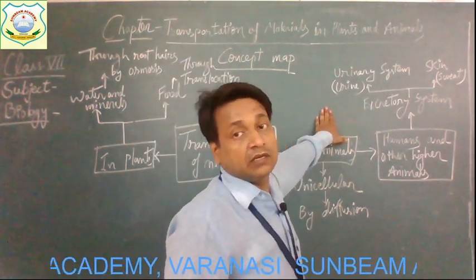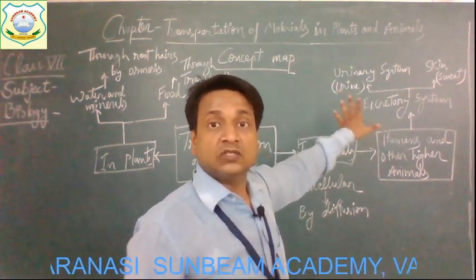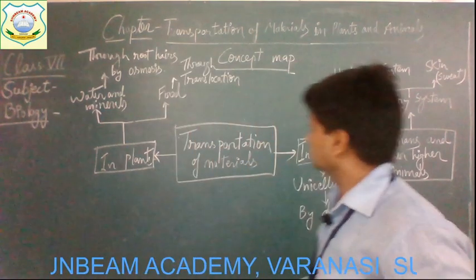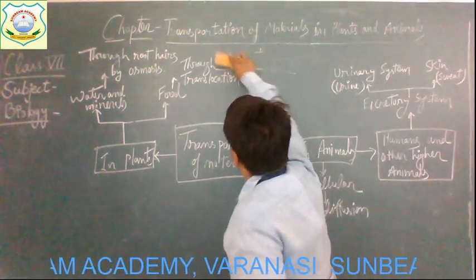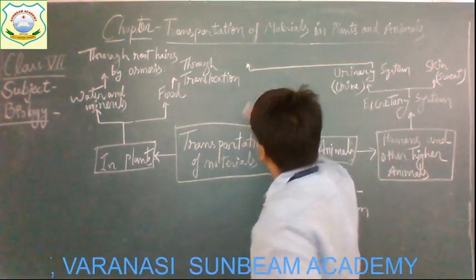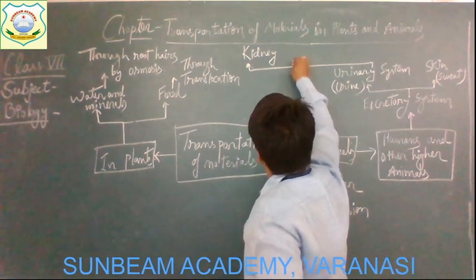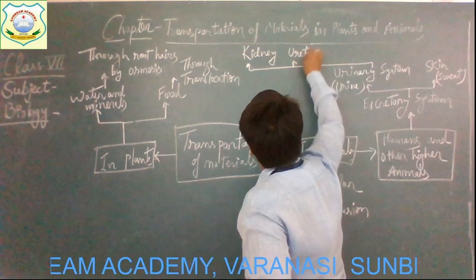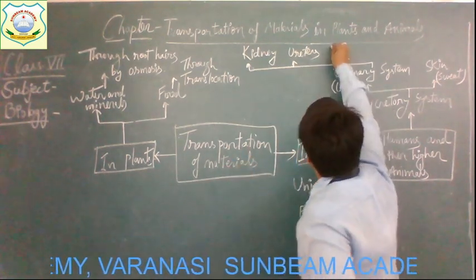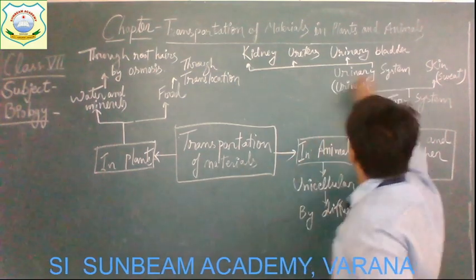The urinary system removes urine and through skin, sweat is removed. This urinary system in humans consists of four different parts: the first part is kidney, the second is ureters, the third is urinary bladder, and the fourth part is urethra.